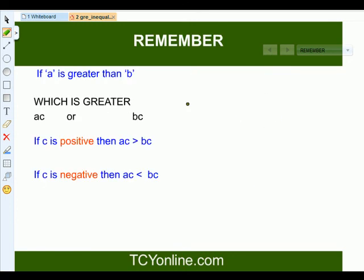So once again, let's revise that if A is given greater than B, then if we multiply this by C, that is some positive number, then AC will be simply greater than BC. And if we multiply by negative, then the sign gets reversed. That is, AC will be now lesser than BC.